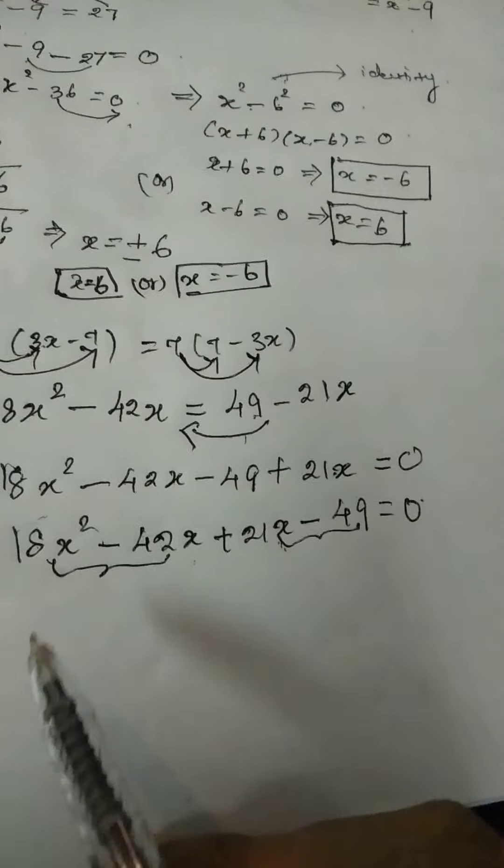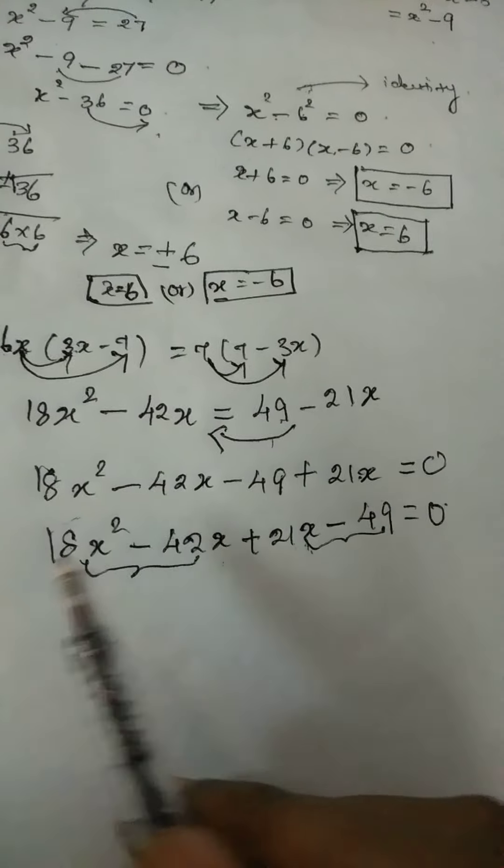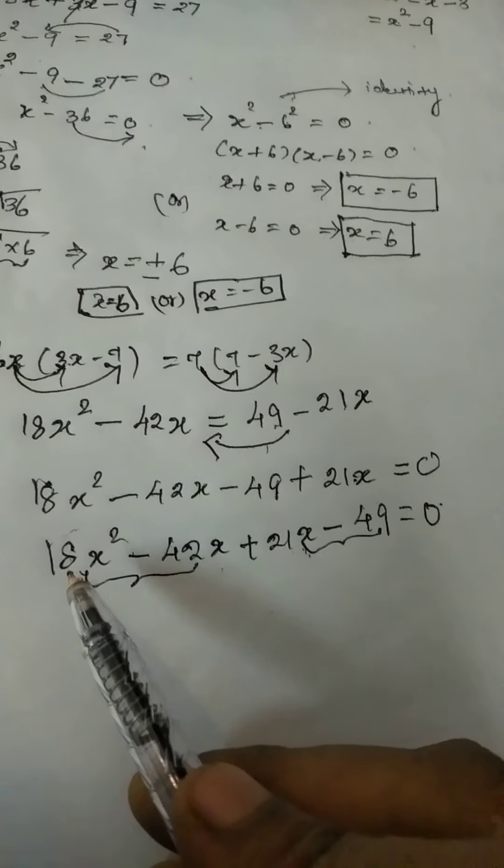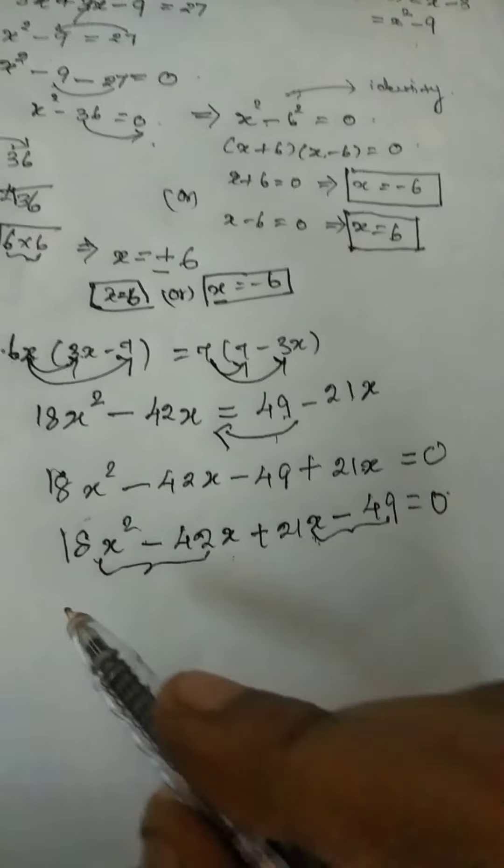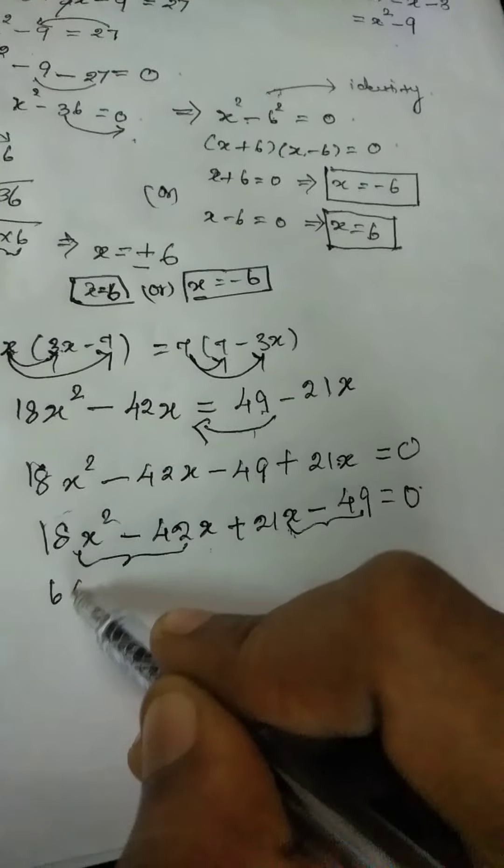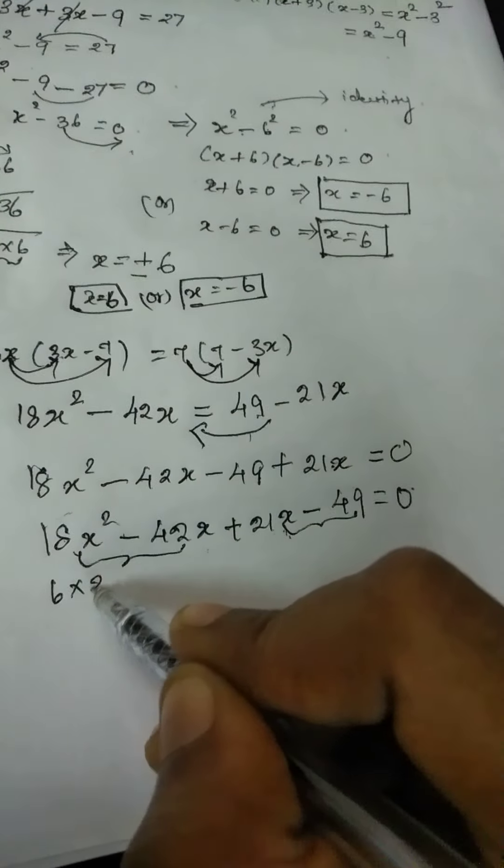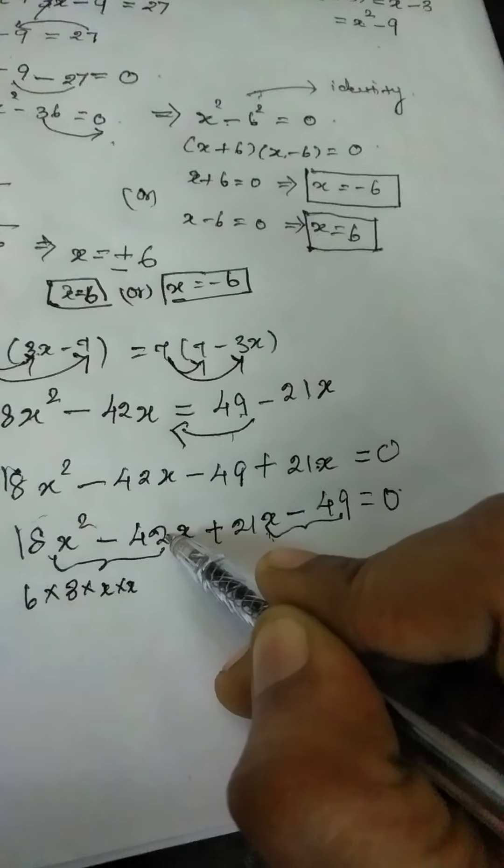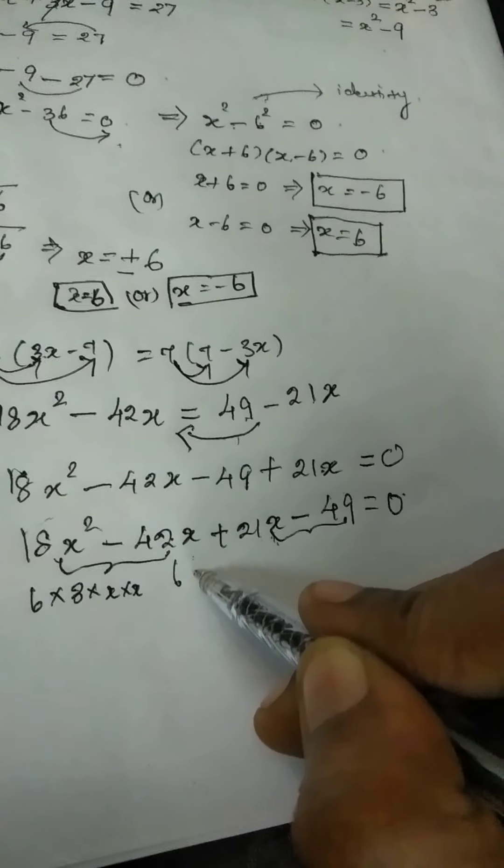After you have reached this step you can grouping the first 2 numbers and the next 2 numbers. Just look at that any common factor is available here. So how to write your 18? It is 6 into 3 and x square can return as x into x.